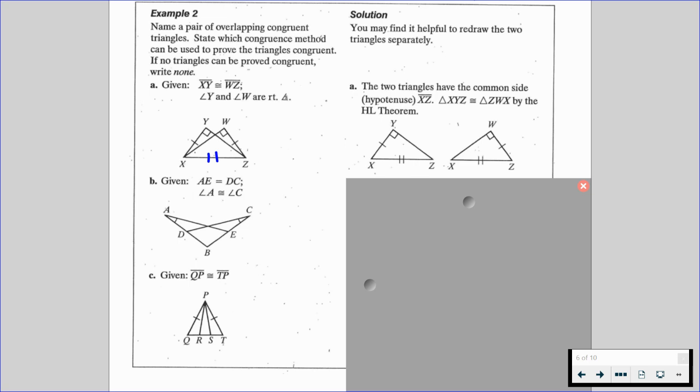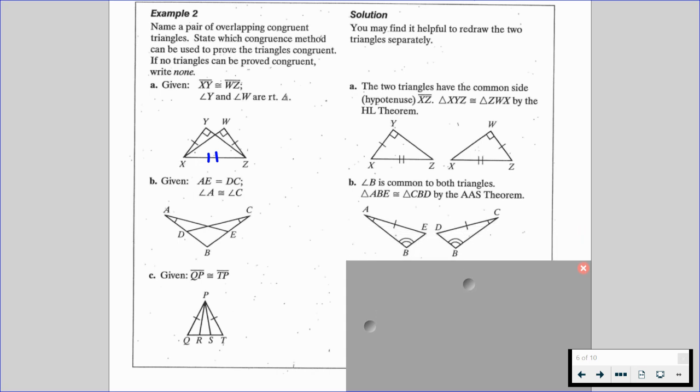For B, we're given that the length of AE is equal to the length of DC and angle A is congruent to angle C. Again, if we draw them separately, we know that B is going to be a common angle. So B is a common angle. As we separate them out, we're now going to be able to use the angle-angle-side theorem here. So triangle ABE is congruent to triangle CBD. And then lastly,